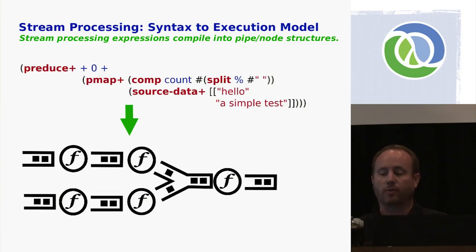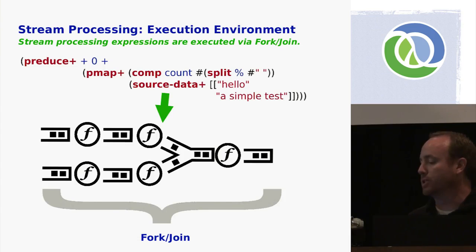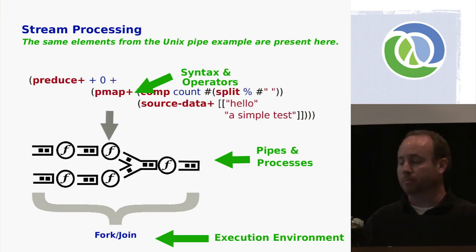What we've built is a compiler that will take a stream processing expression of that form and compile it down to produce a structure of nodes and pipes, which is the thing that's actually run — on a fork-join pool. That's where the fork-join comes in. This shows you all the same elements I showed in the Unix pipe invocation.